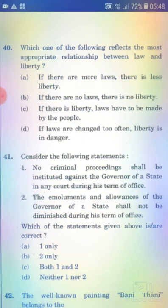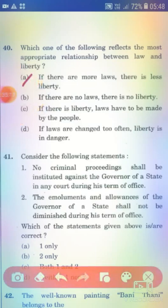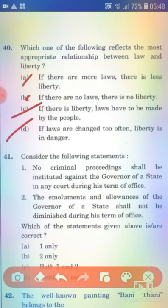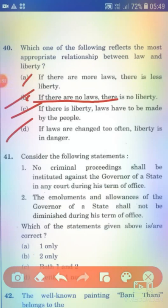Which one of the following reflects the most appropriate relationship between law and liberty? Option A: If there are more laws, there is less liberty. Option B: If there are no laws, there is no liberty. Option C: If there is liberty, laws have to be made by the people. Option D: If laws are changed too often, liberty is endangered. The right answer is Option B — if there are no laws, there is no liberty.